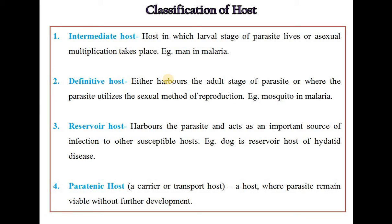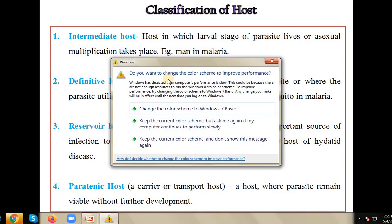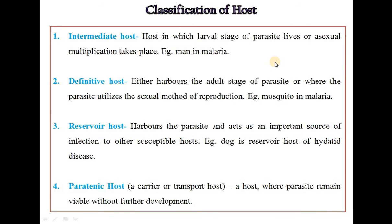What is the classification of host? There are different categories. The first category is the intermediate host — the host in which larval stages of the parasite live or asexual multiplication takes place. For example, man in the case of malaria. Always remember: in the intermediate host, sexual reproduction of the parasite will not take place.